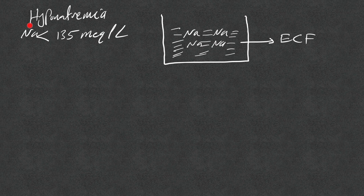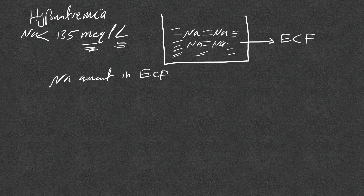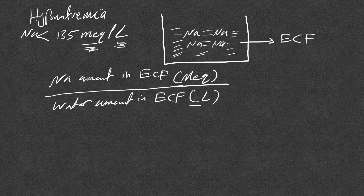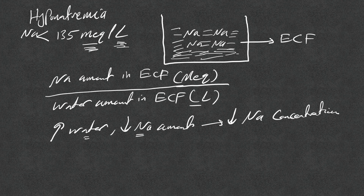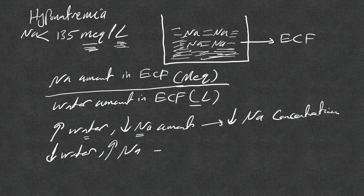We define hyponatremia as sodium concentration less than 135 milliequivalents per liter. The milliequivalent refers to the sodium amount in the extracellular fluid, and the liter refers to the water amount. From this equation, the more water or the less sodium, the lower the sodium concentration. More water leads to decreased sodium concentration, or hyponatremia, and the opposite is also true.